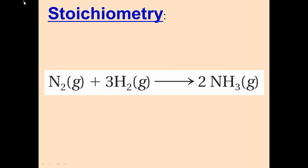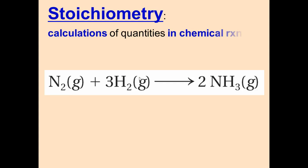Hello, this is Maraj Patel, and today we're going to be starting Unit 9, which is all about stoichiometry. Today we're going to be specifically talking about how to interpret chemical equations to find the number of moles, molecules, atoms, and mass. We're also going to be talking about conversions between reactants and products. Stoichiometry, first of all, is the calculations of quantities in chemical reactions.